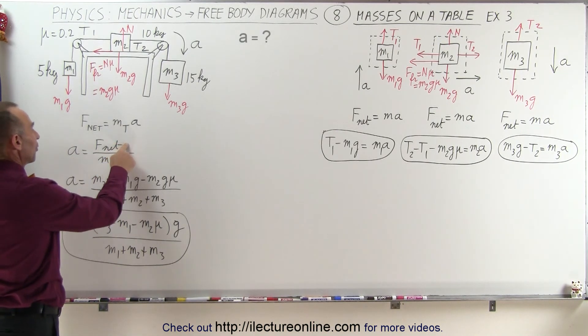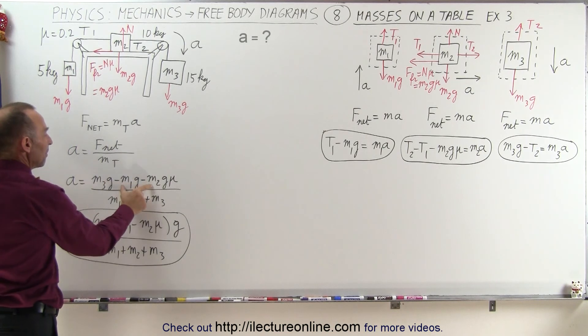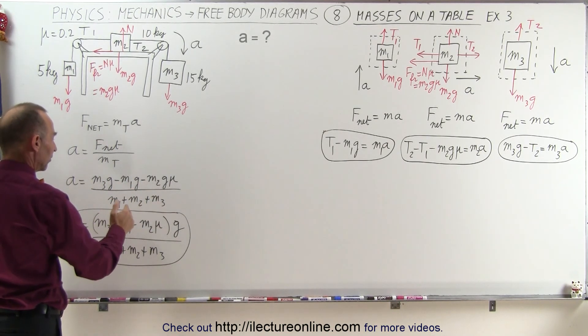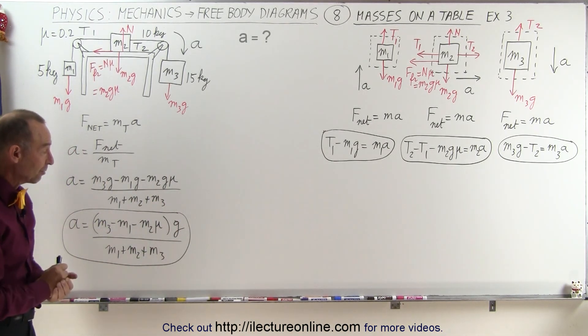So the acceleration now is the net force divided by the total mass, which is the force aiding the acceleration, minus the two forces opposing the acceleration, divided by the total mass. And when we factor out a g, we get an expression for the acceleration. It's very straightforward.